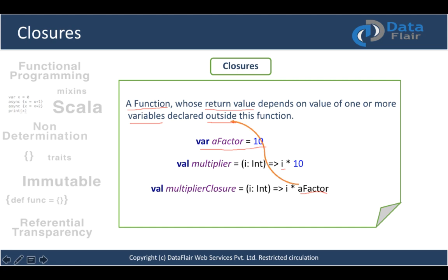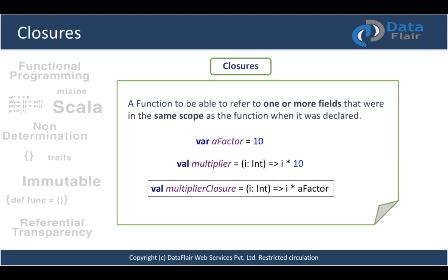Remember the key: the variable must be declared outside the function to make it a closure. The closure must be able to refer to fields in the same scope as the function when it was declared. When using this closure, make sure the 'factor' variable resides in the same scope so the closure has access to it at execution time. Let's open IntelliJ IDEA and practice closures.